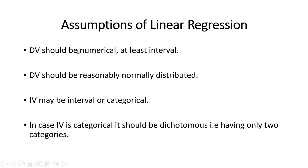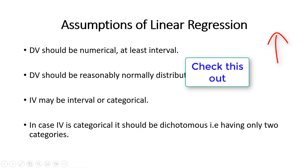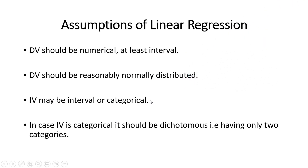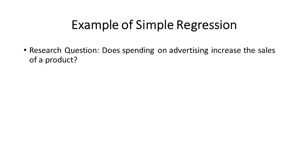There are a few assumptions for linear regression. First, the dependent variable should be numerical — at least interval, and ideally ratio level. The dependent variable should be reasonably normally distributed (we have already discussed how to check this). The independent variable may be interval or categorical; if it is categorical, it should be dichotomous, meaning it should have only two categories, as SPSS cannot handle more than two categories directly.